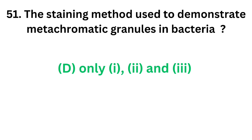That is Albert's, Ponder's and Nacer staining. These are used to demonstrate metachromatic granules in bacteria.